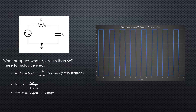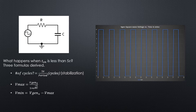So we have three key formulas. First: number of cycles to stabilization = 5 tau divided by period. Second: Vmax = V-gen divided by (1 plus e to the negative time over RC), derived from the capacitor charge formula. Third: V-min = V-gen minus V-max, derived from the symmetry of charge and discharge around the average generator voltage.